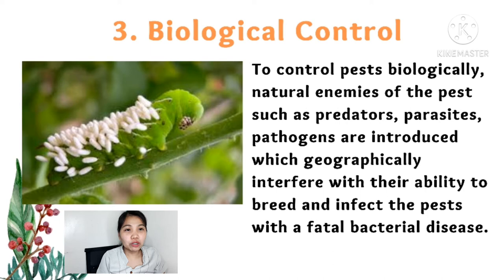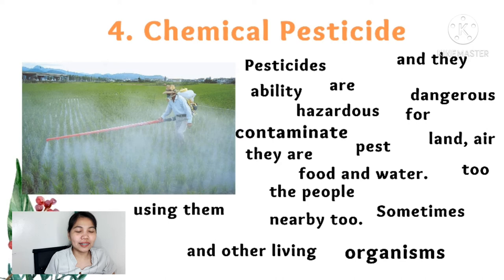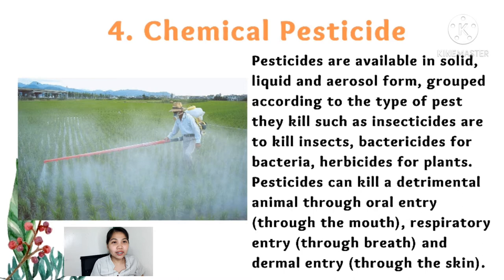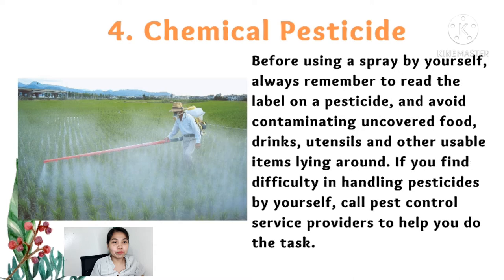Four: chemical pesticides. Using chemical pesticides poses a hazard to the environment, but it is the most effective and fastest way to eradicate pests in a large-scale farm. A person applying chemical pesticides should wear proper PPE to avoid contamination on the body.